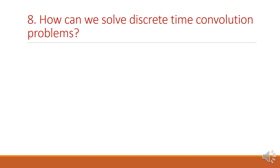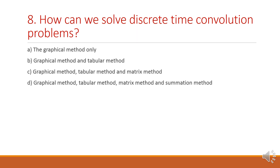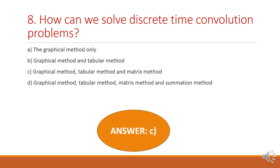Next question: how can we solve discrete time convolution problems? Option A: graphical method. Option B: graphical and tabular method. Option C: graphical, tabular and matrix method. Option D: graphical, tabular, matrix and summation method. The answer is option C because three methods can be used: the graphical method, the tabular method and the matrix method.